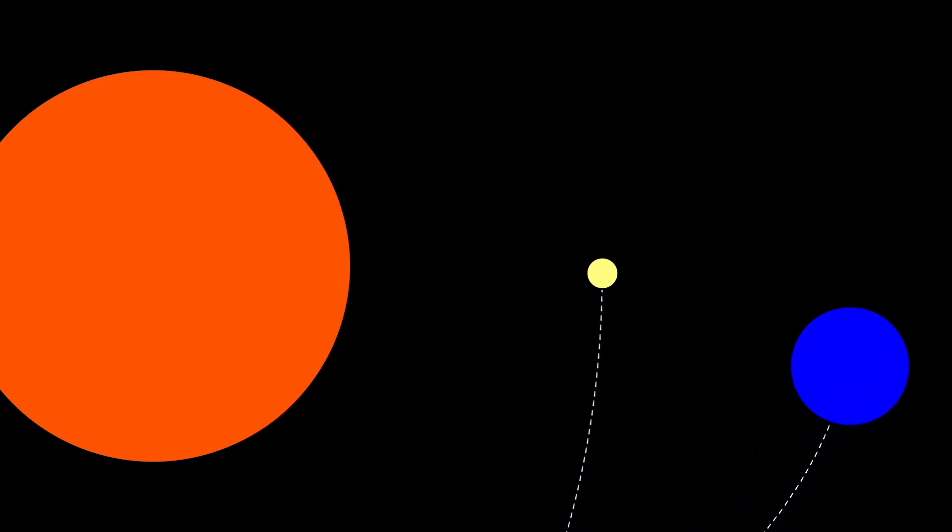The earth orbits the sun. The sun appears to be the cause of its orbit. Light bends toward the sun. Again, the sun appears to be the cause.